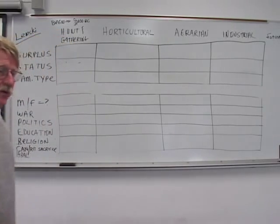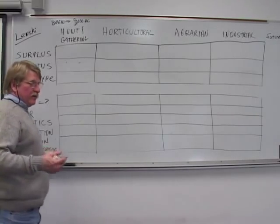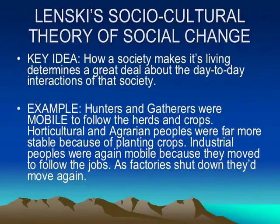9,000 years ago as the dominant type of society that existed on planet Earth. Now hunters and gatherers still exist on planet Earth, but they're rapidly disappearing. When they made their living, they hunted and they gathered, and that specifically determined a great deal.